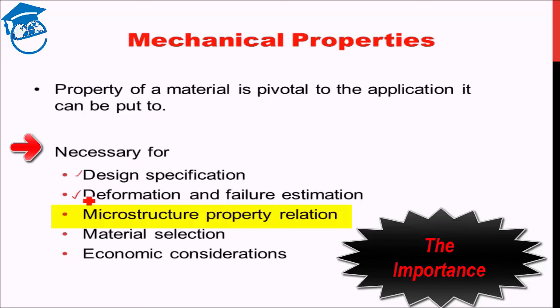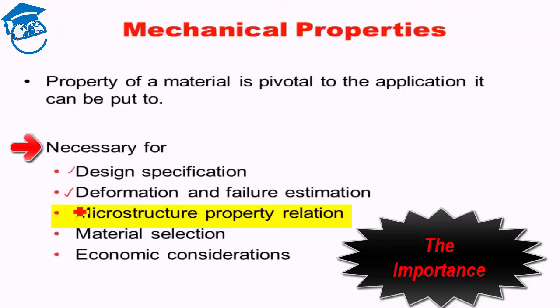The knowledge of mechanical properties also lets you find the relation between microstructure and property. Different microstructures have different property behaviors. Once you know what mechanical properties need to be identified, you study those properties for different microstructures. Once you know the property values for different microstructures, you can pinpoint which microstructure or material is needed for a particular application — that is where material selection comes in, whether it is iron, steel, or aluminum.